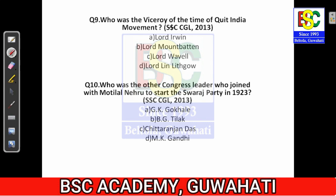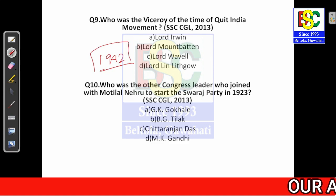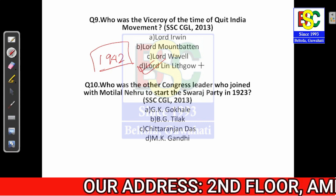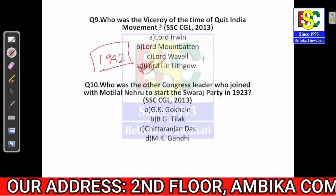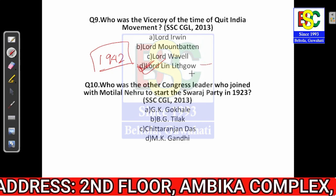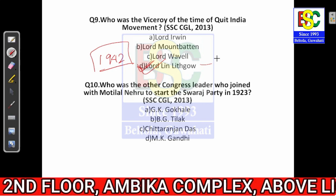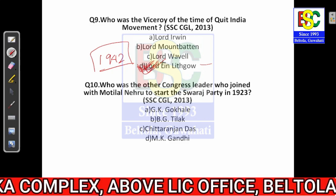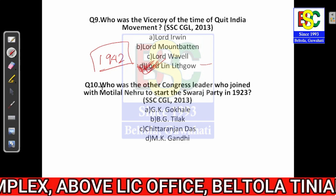Question number nine: who was the viceroy of India during the Quit India Movement? The Quit India Movement happened in 1942. The answer is Lord Linlithgow. You can remember him because he was the person who put India's name forward as being with Britain in the Second World War.